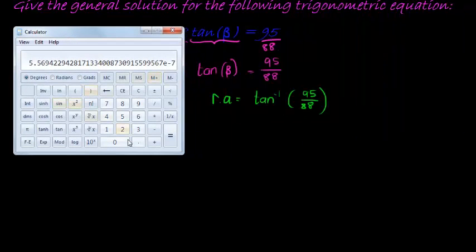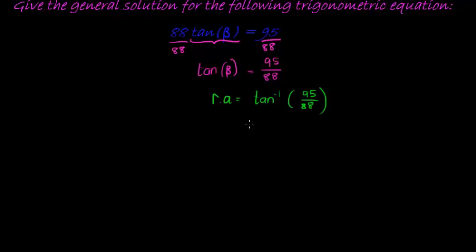So we have 95 divided by 88, which gives me 1 point blah blah blah. That's not important. What is important is if I take the inverse function of tan, I get 47.19 as my reference angle. 47.19 degrees is my reference angle.